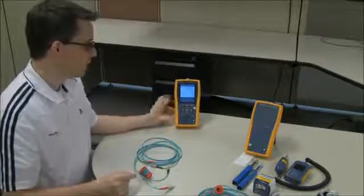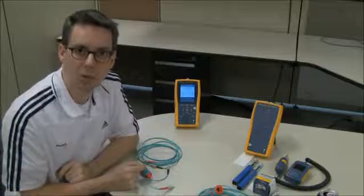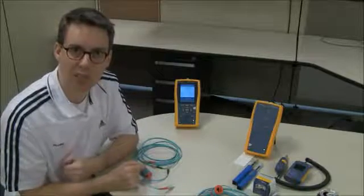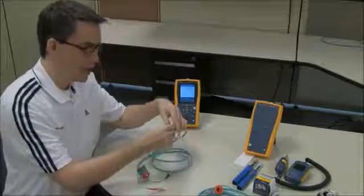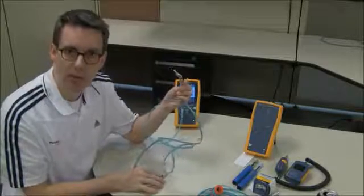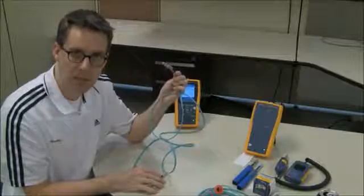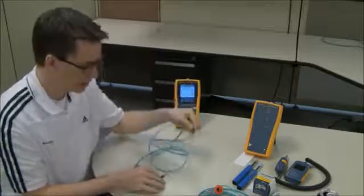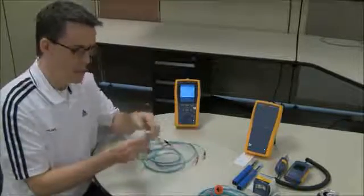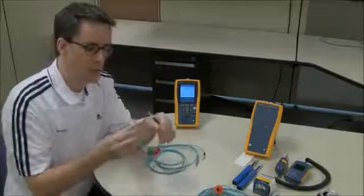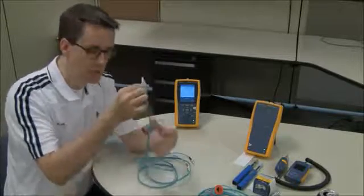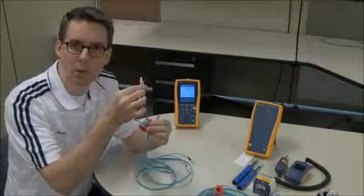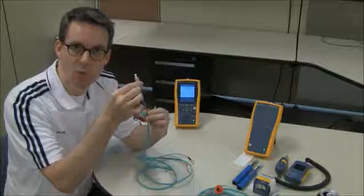In order to do a OneJumper reference, we need to be using hybrid test reference cords, or TRCs. They're hybrid because at one end we have duplex LC, that makes sense, we're testing duplex LC today. The other end, a little bit strange, we have LC, but we also have an SC connector with this red thing on it, which is called a mandrel, and it's critical that you use a mandrel, otherwise your readings are going to be pessimistic.